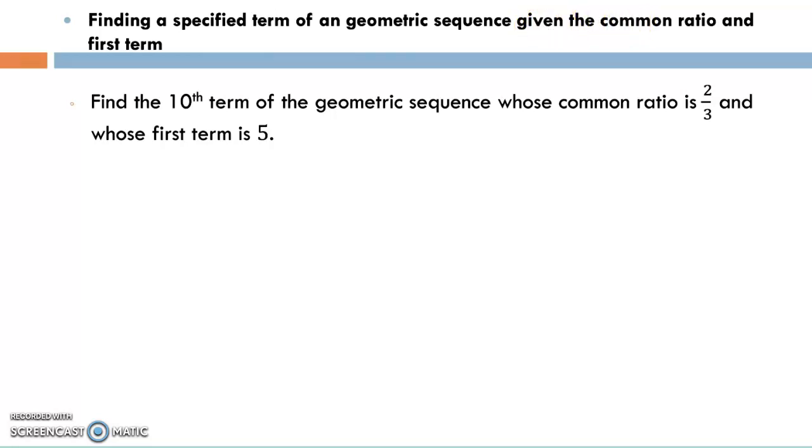We're told to find the tenth term of the geometric sequence whose common ratio is two-thirds and whose first term is five.